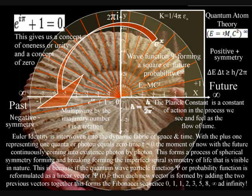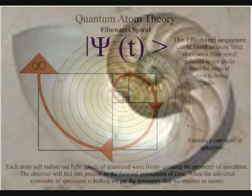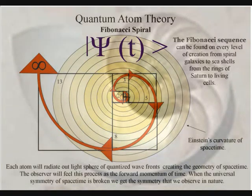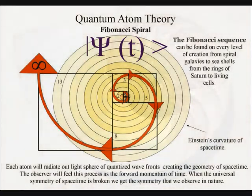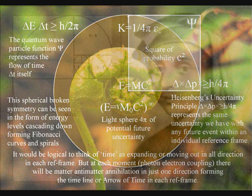This is because if the quantum wave particle function, or probability function, is reformulated as a linear vector, then all the information I can find says that each new vector is formed by adding the two previous vectors together. This forms the Fibonacci sequence.